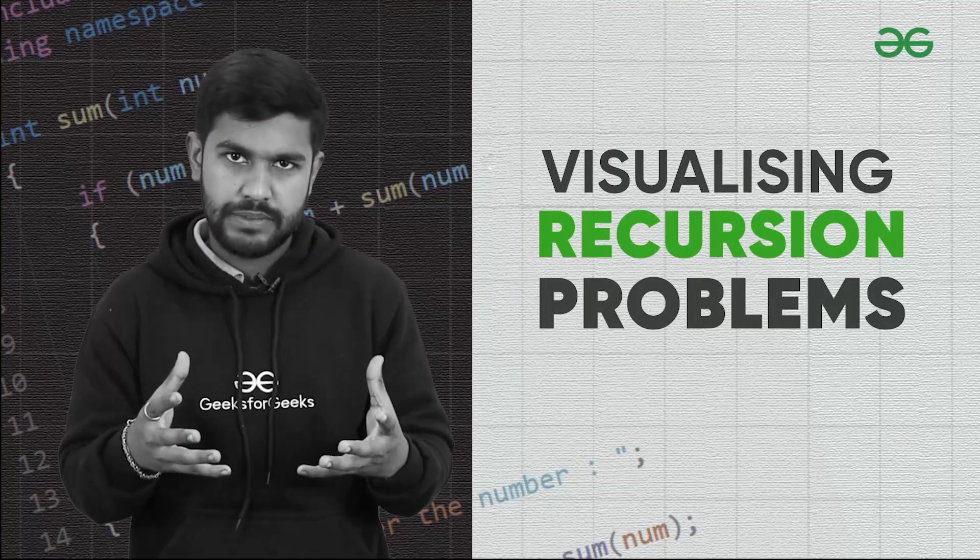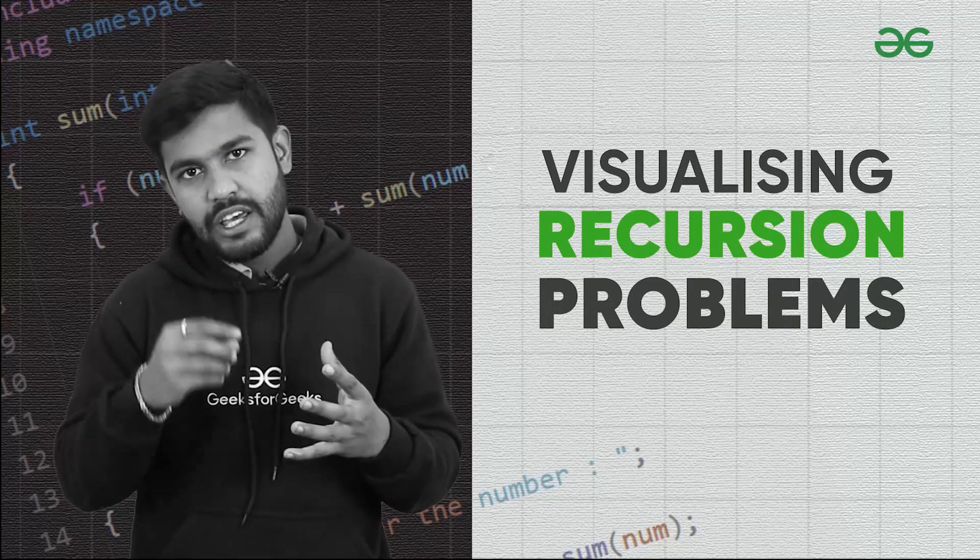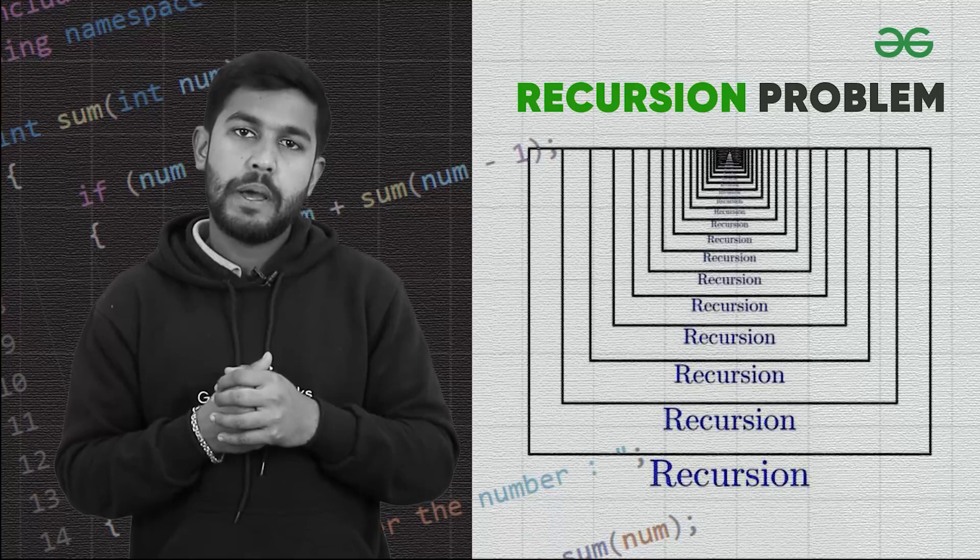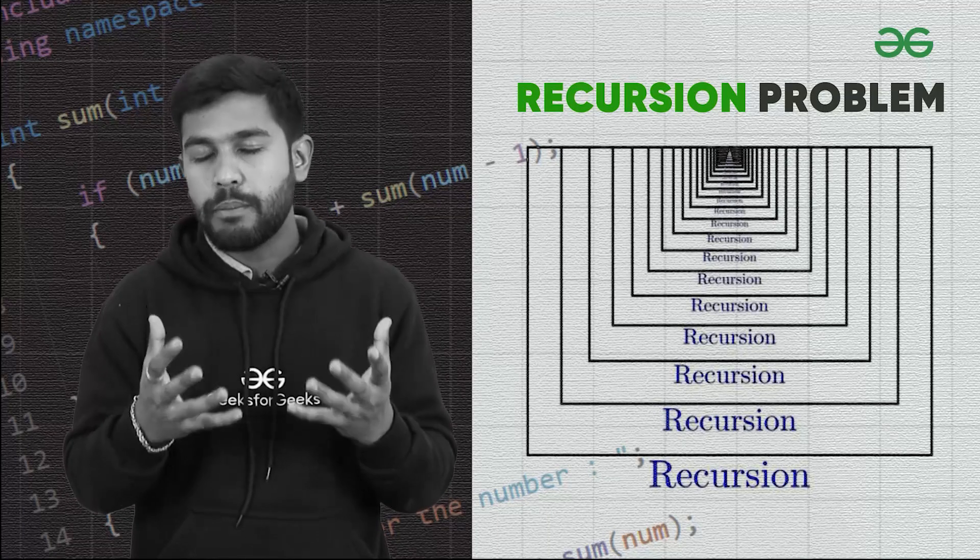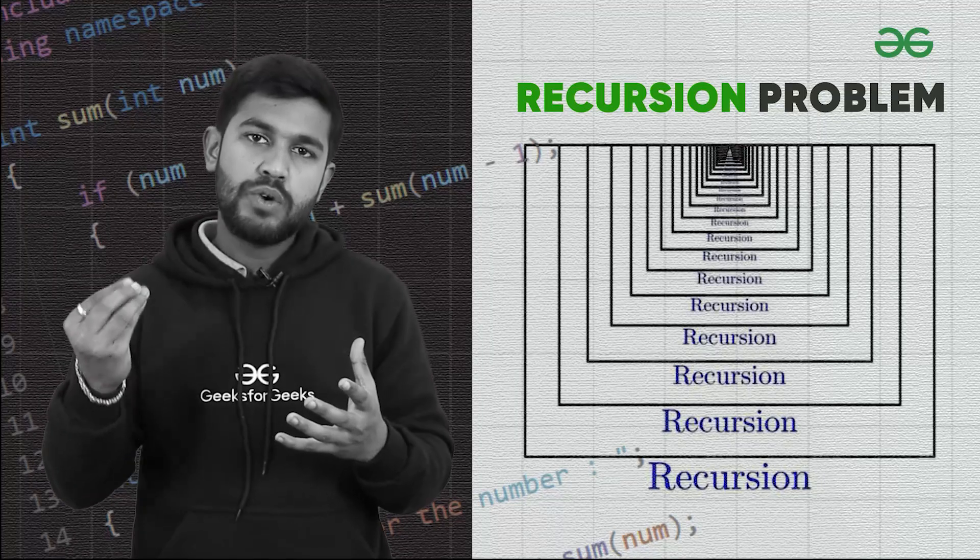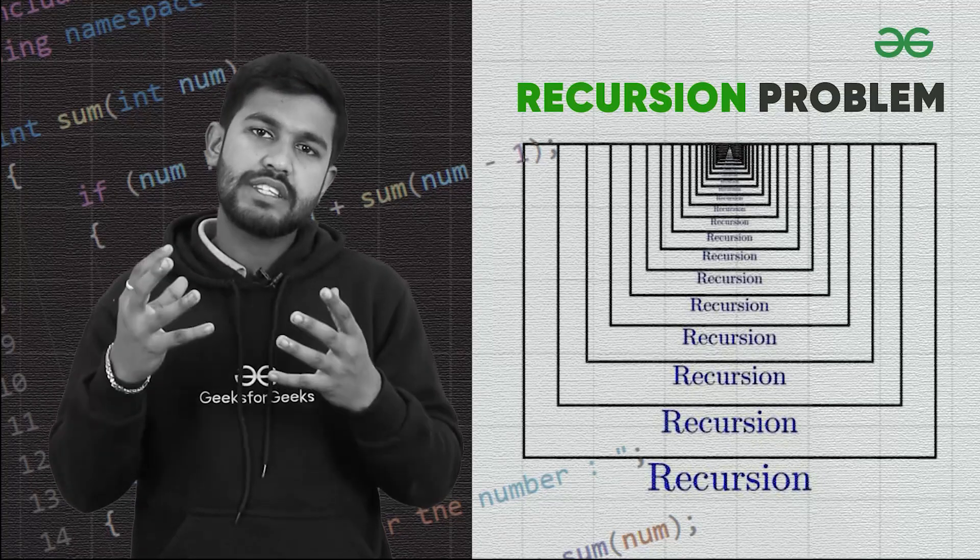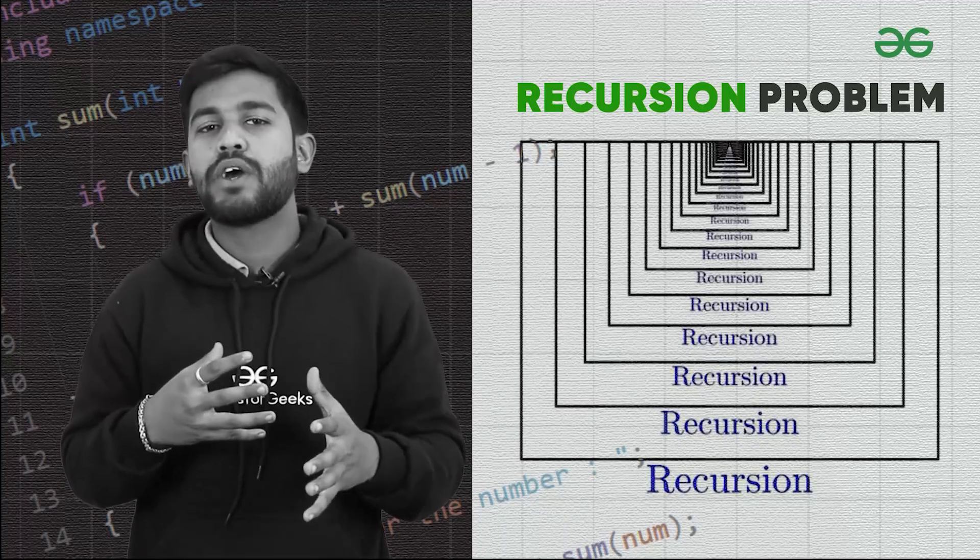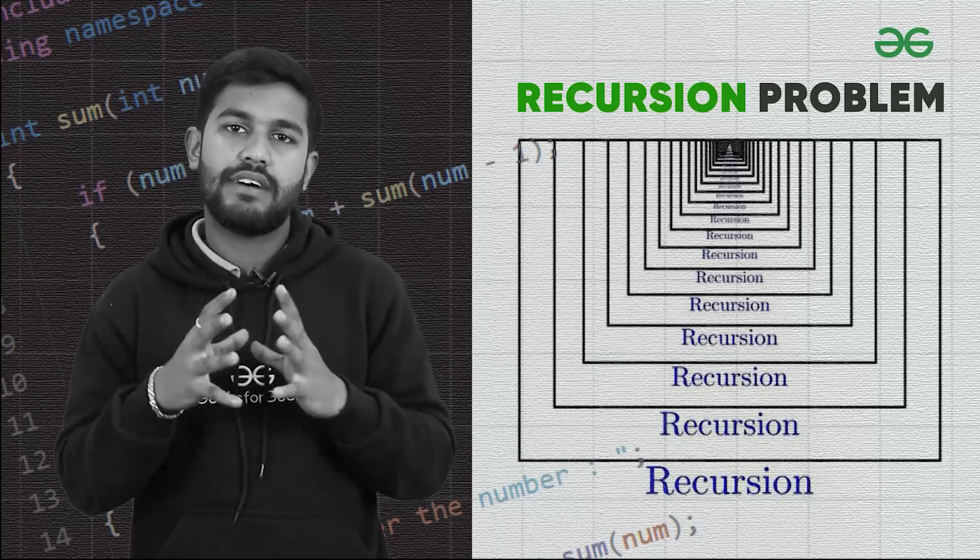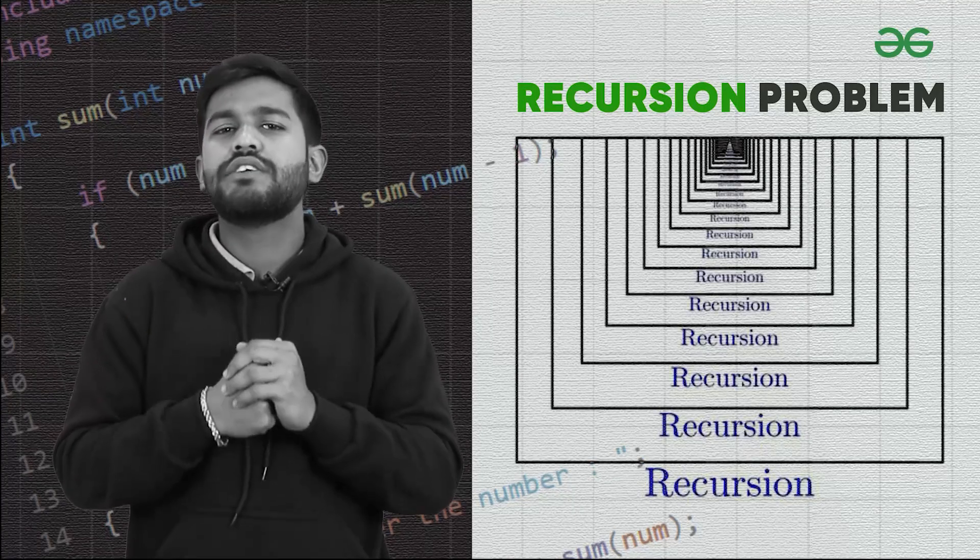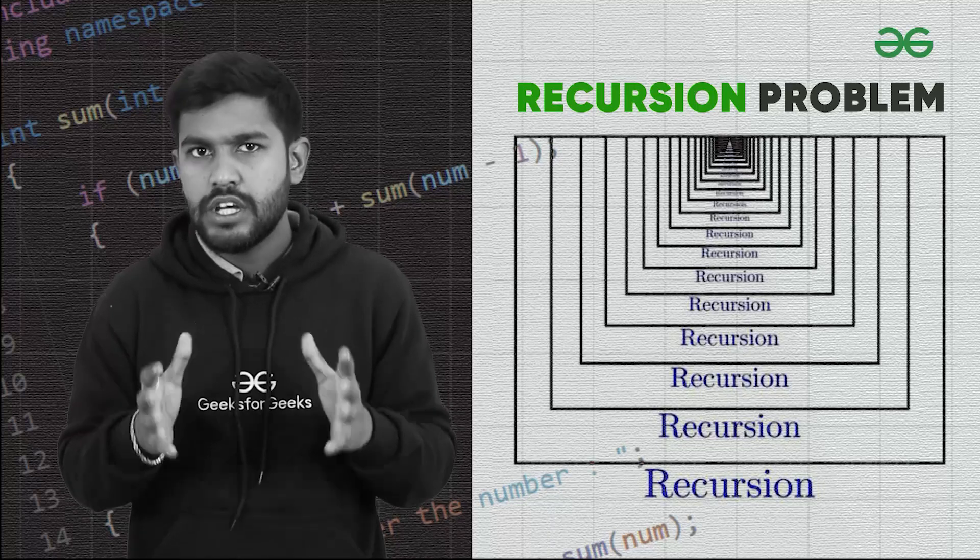The next step is to start practicing recursion problems, but the main problem you would encounter is that the number of recursion problems is way less than other algorithms. This is because in online judges they have a number of operations limit of 10 to the power 8, but the time complexity of recursion is exponential, so the amount of problems is very less.